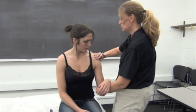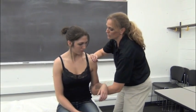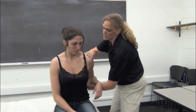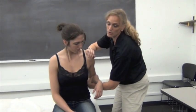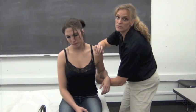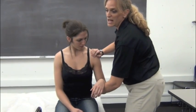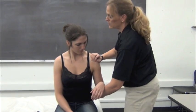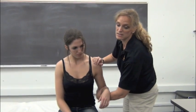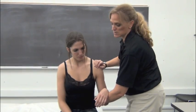We can also palpate the attachment of the supraspinatus anteriorly, which attaches to the greater tubercle. To do this, fully extend the arm, come off the anterior aspect of the acromion, and palpate right there for reproduction of symptoms. Given the attachment of the supraspinatus, we can only palpate it with the arm extended — and again, it's more about reproduction of symptoms than being able to palpate a specific structure.